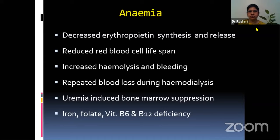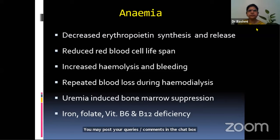Initially we used to see patients coming with hemoglobin as low as 4 to 5 grams percent, which used to affect renal perfusion and the outcome of the transplant. Nowadays, patients come with good hemoglobin of 8 to 10 grams percent and our results are better.